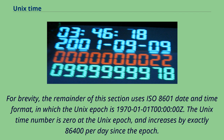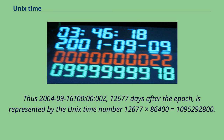For brevity, the remainder of this section uses ISO 8601 date and time format, in which the Unix epoch is 1970-01-01T00:00:00Z. The Unix time number is 0 at the Unix epoch, and increases by exactly 86,400 per day since the epoch. Thus 2004-09-16T00:00:00Z, which is 12,677 days after the epoch, is represented by the Unix time number 12,677 × 86,400 = 1,095,292,800.